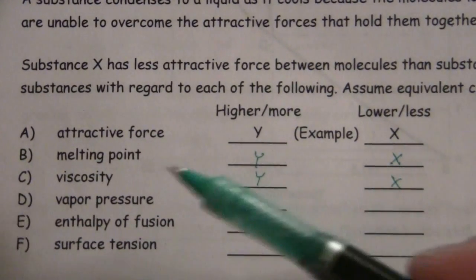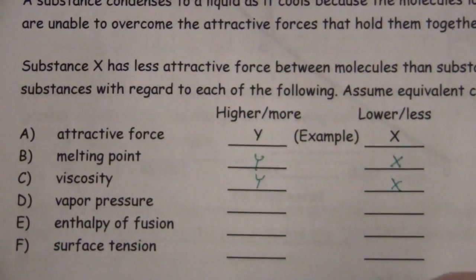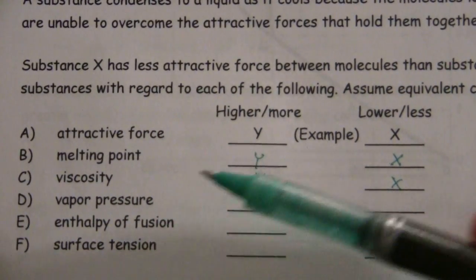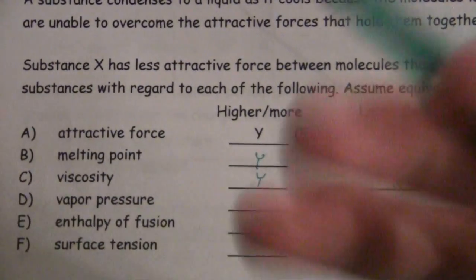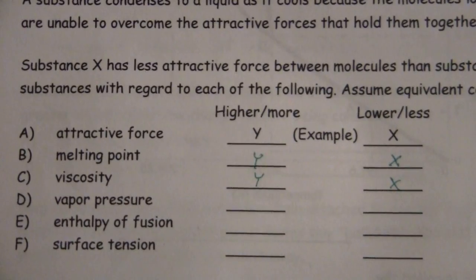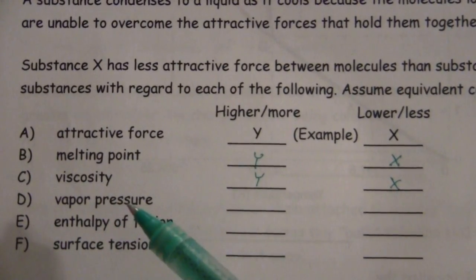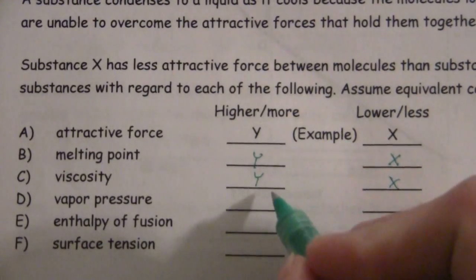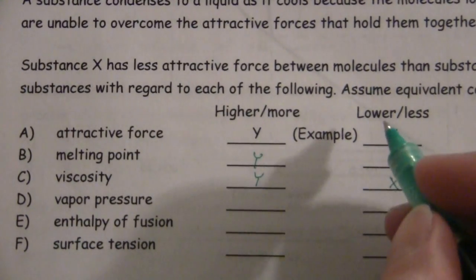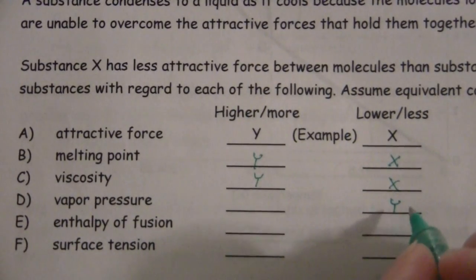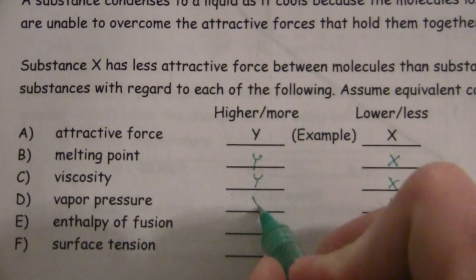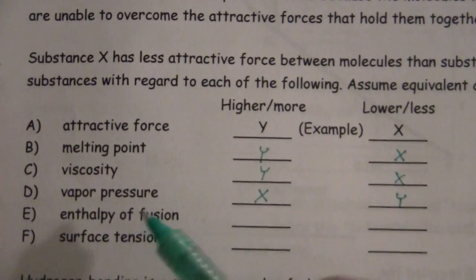Vapor pressure, that is the pressure exerted on the liquid by the molecules that are escaping it. So if there is a greater force holding those molecules together then they will be less likely to escape into the vapor phase and we would find that the vapor pressure is reduced. So the higher, the one with higher forces will have the lower vapor pressure. The one with lower attractive force will have the higher vapor pressure because more molecules are able to escape.